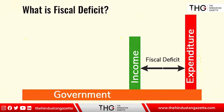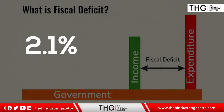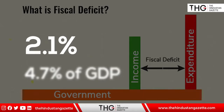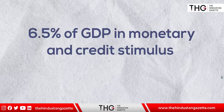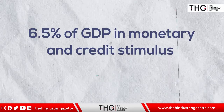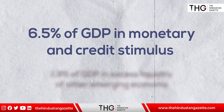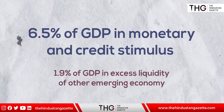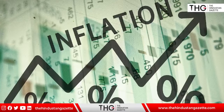During COVID, the Indian government announced Atmanirbhar Bharat, which is basically about spending more and collecting less tax — meaning a higher fiscal deficit. We had a very low fiscal deficit before that: 2.1% compared to 4.7% of GDP for other emerging economies. In comparison, we gave 6.5% of GDP in monetary and credit stimulus, compared to just 1.9% of GDP in excess liquidity for other emerging economies. That is why the inflation rate will go up further.